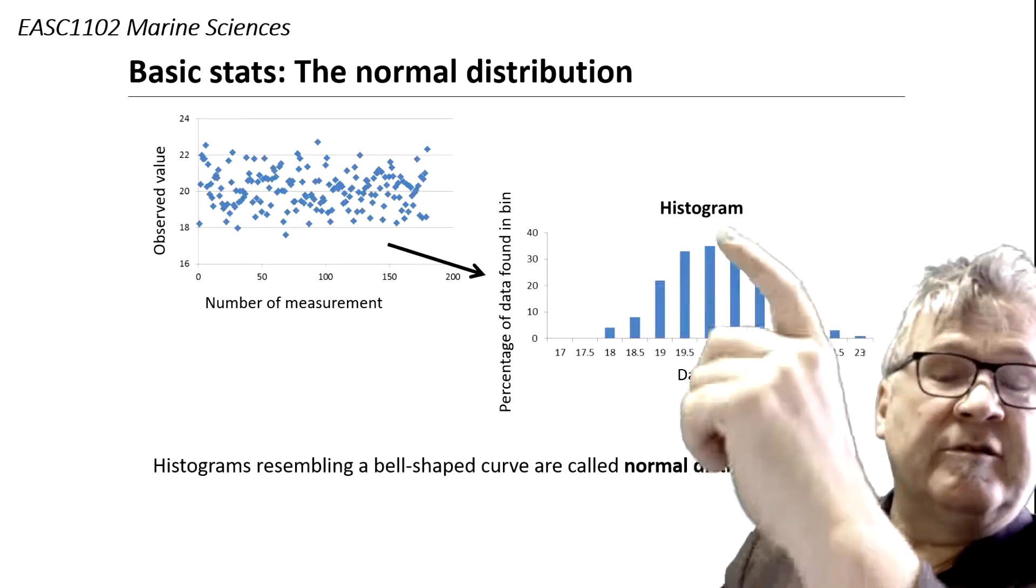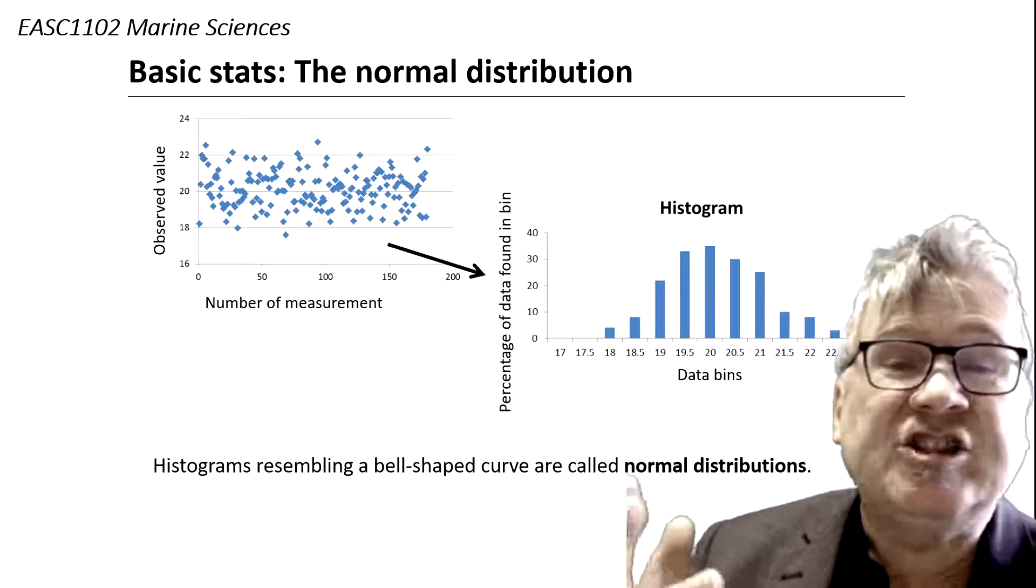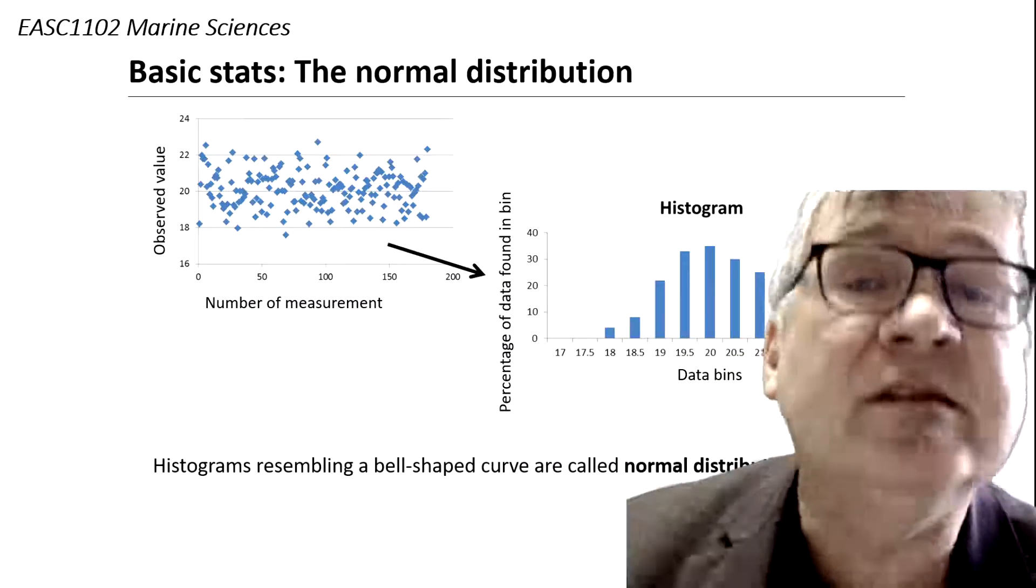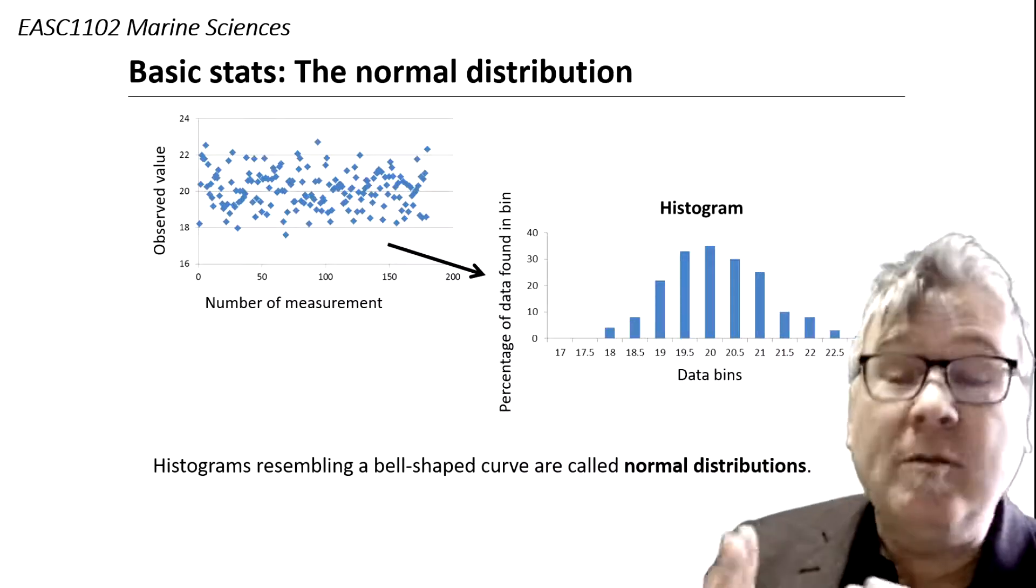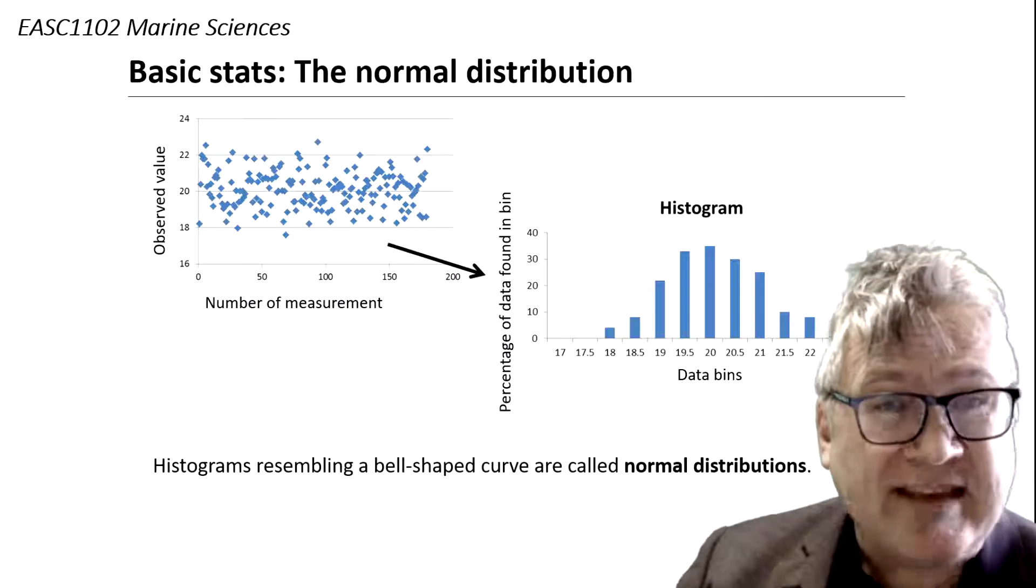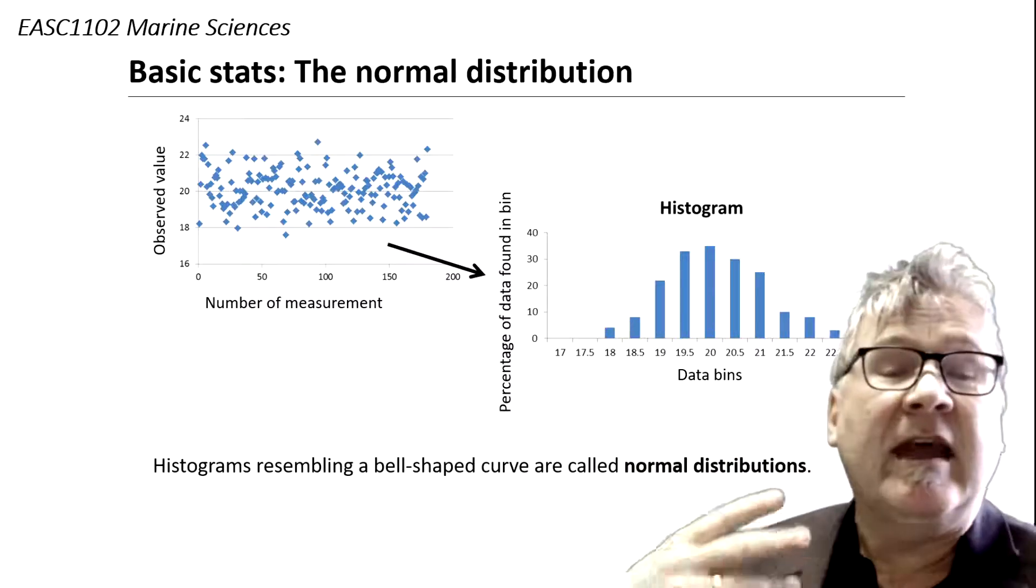And in the end you can convert it to a percentage and you get a distribution. You can see this distribution here and if it resembles a bell-shaped curve, it is a normal distribution. That's often the basis used for statistical analysis.